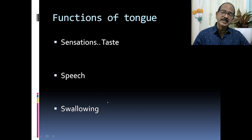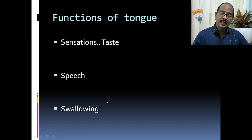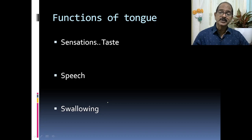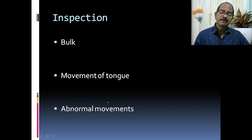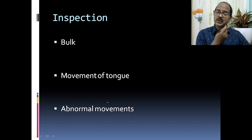Today we will focus just on the neurological examination. To begin with, you look in good lighting with the mouth open — tongue in the resting position and later in the protruded position. On inspection, first assess the bulk; there can be wasting of one half or bilaterally in cases of hypoglossal lesions. Movements of the tongue are tested by asking the patient to touch the cheeks.